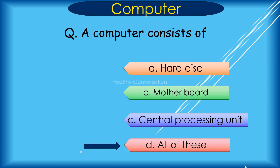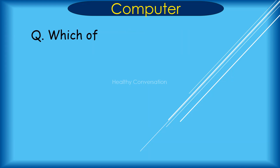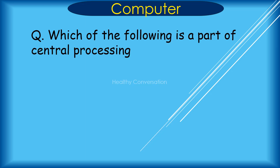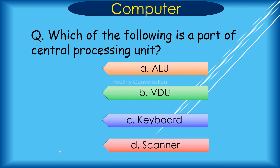Question: Which of the following is a part of the central processing unit? A. ALU, B. VDU, C. Keyboard, D. Scanner. Correct answer is A. ALU.